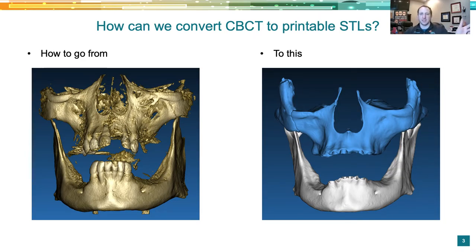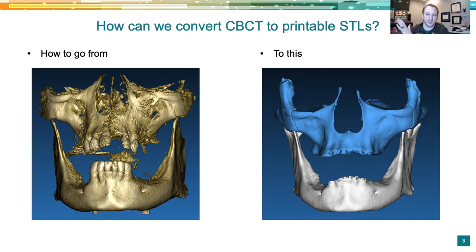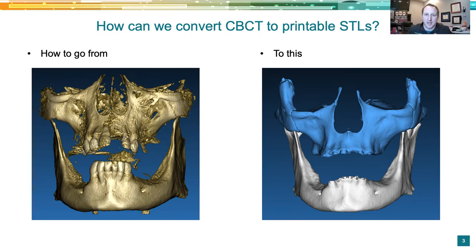How do we go from a CBCT rendering to a clean printable model or series of models? There are several ways — tedious inexpensive ways, all the way to non-tedious but expensive ways. Most CBCTs can give a general outline of a rendering based on Hounsfield units. You can adjust the slider to see bone, soft tissue, or other structures. But you can't just click a button and print that — you have to convert the rendering into a 3D printable file.